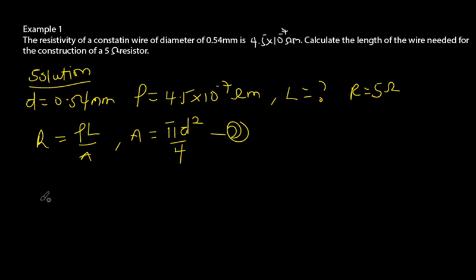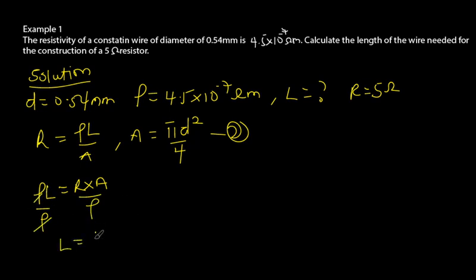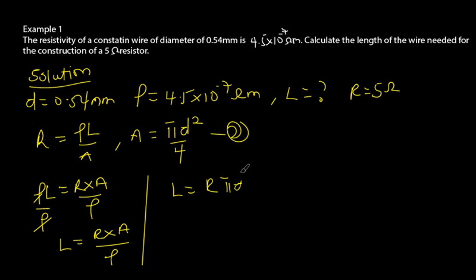Cross-multiplying gives us resistivity times length equals resistance times area. Dividing by resistivity gives length equals resistance times area divided by resistivity. Substituting the area formula, we get: length equals resistance times pi d squared, all divided by four times resistivity.